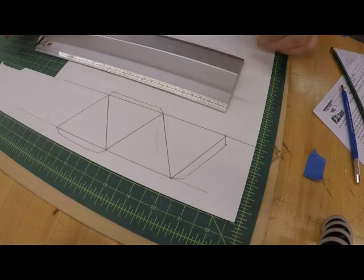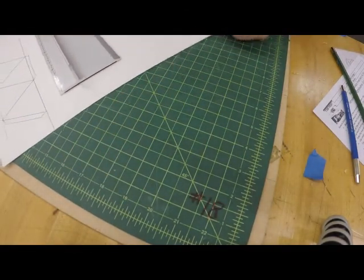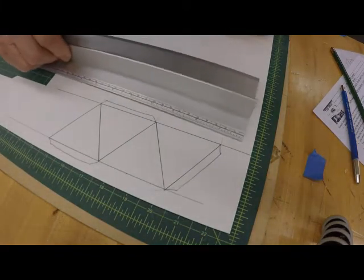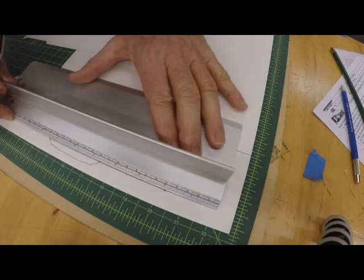Okay, so now notice I've got the cutting mat underneath. I'm not going to be cutting on top of my drawing board. So I'll do some cutting. First of all, the lines that don't have any tabs on them are going to get cut.